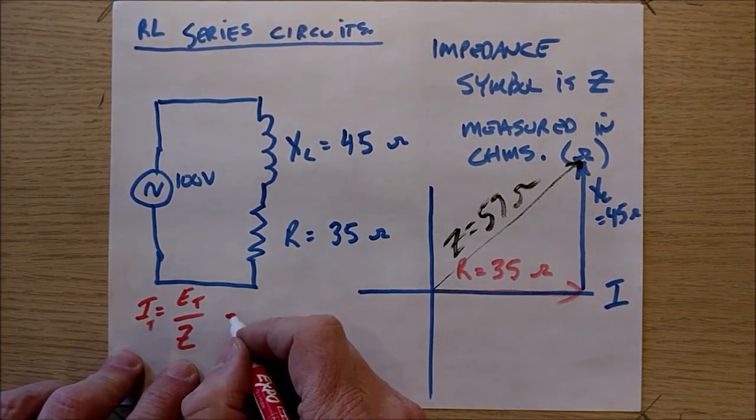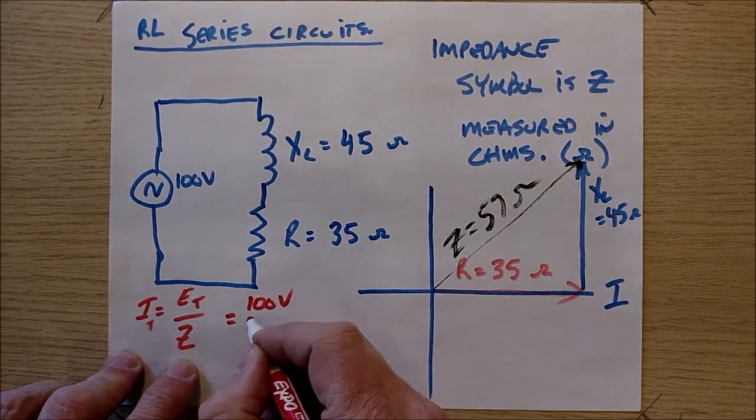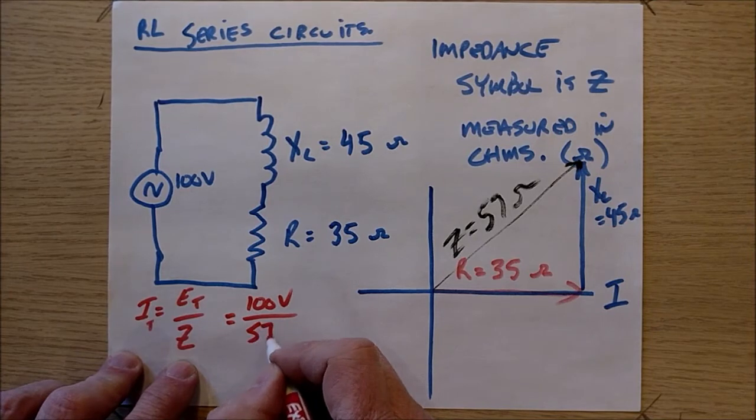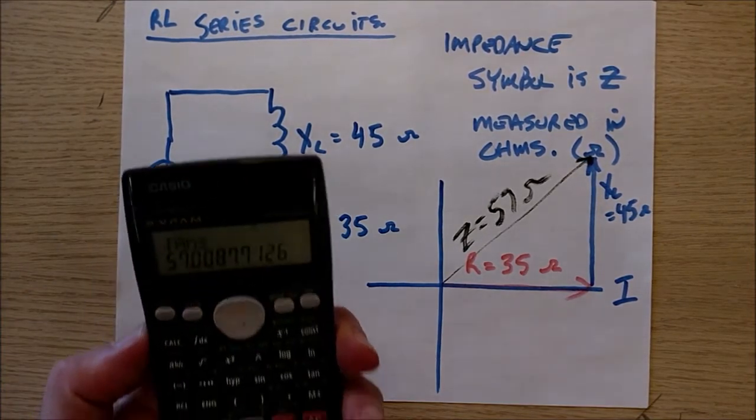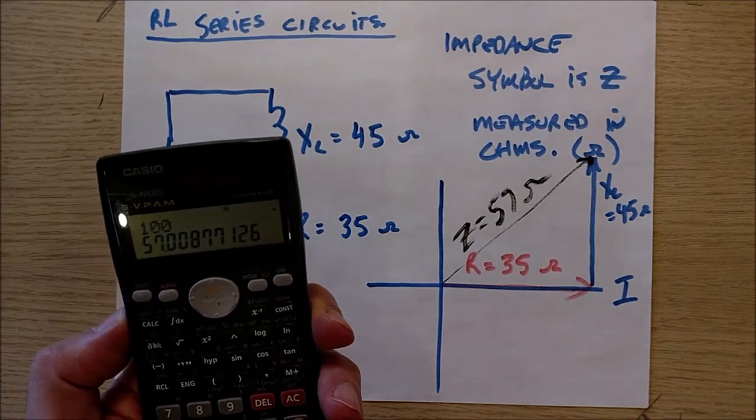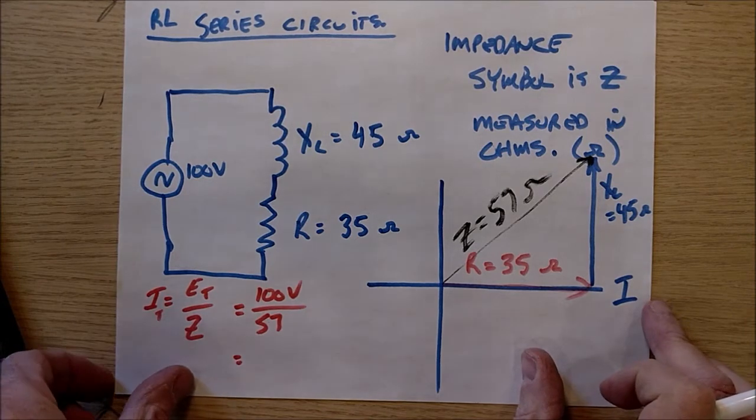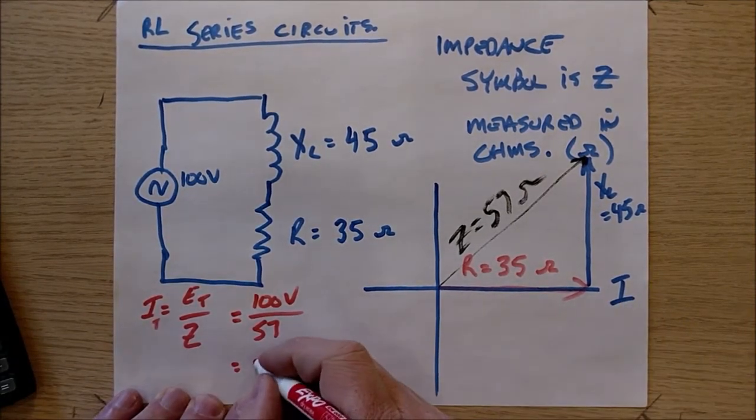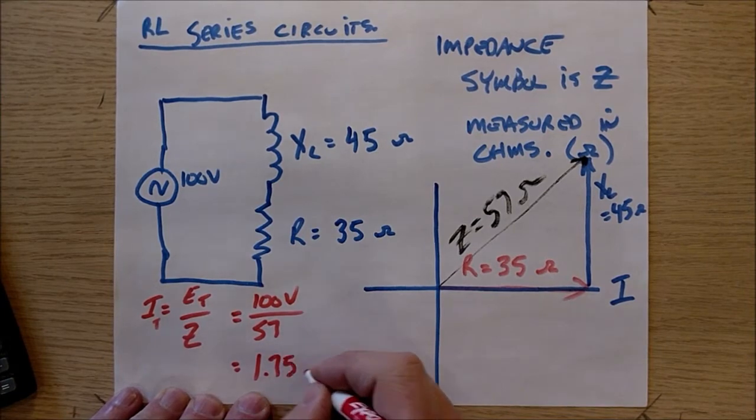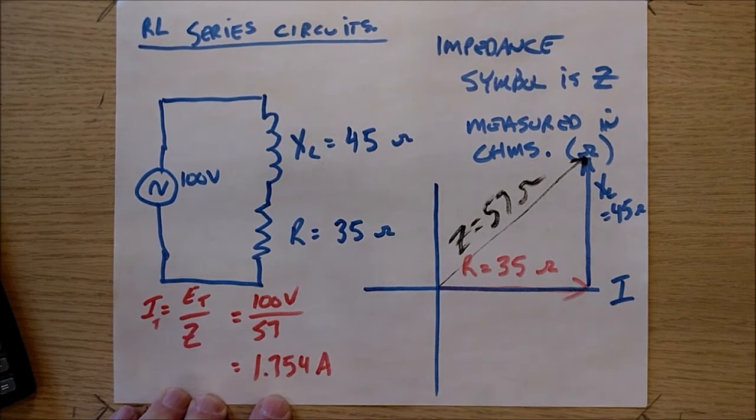And so if I want to calculate the current in this circuit, it is going to be 100 volts over 57 ohms, and it comes to—let's do it—100 divided by 57 equals, got to straighten my paper here. I want to make it in the center. It looks like 1.754 amps flowing in this circuit.